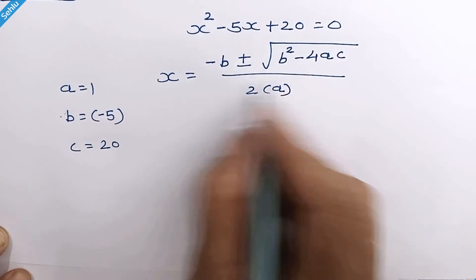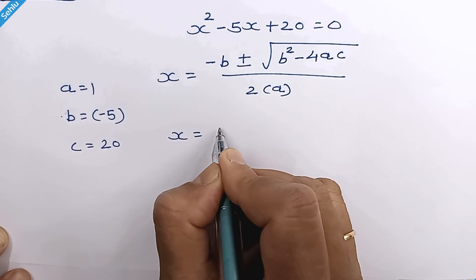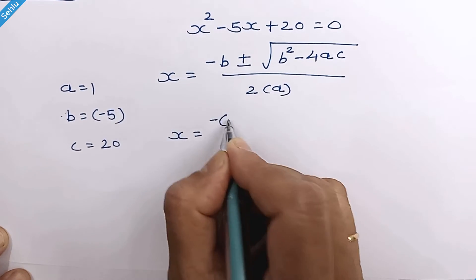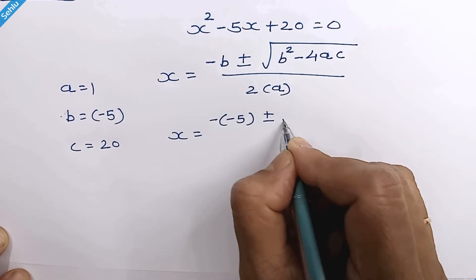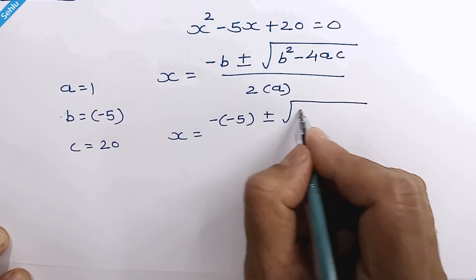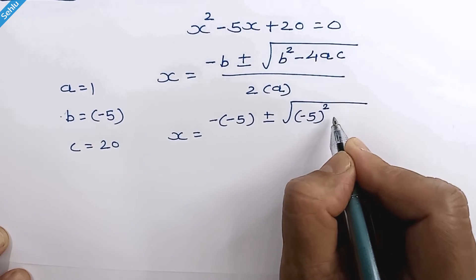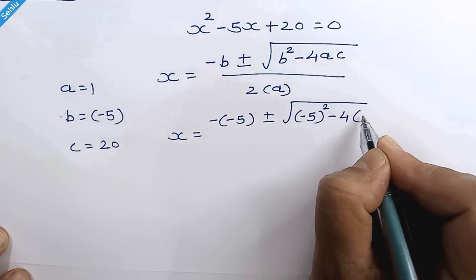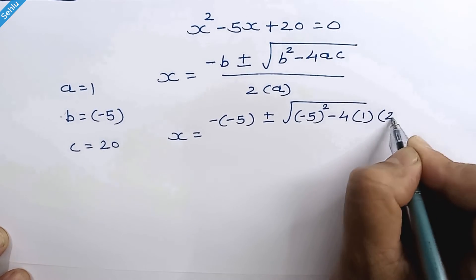In this equation, a is equal to 1, b is negative 5, and c is 20. Let's put these values into the formula. So it will be x equals negative 5, and b squared is negative 5 squared minus 4 times a, which is 1, times c, which is 20.